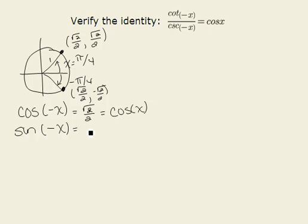sin(-x) equals -sin(x). These are our two negative identities.